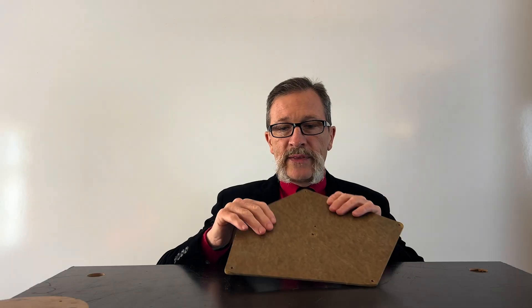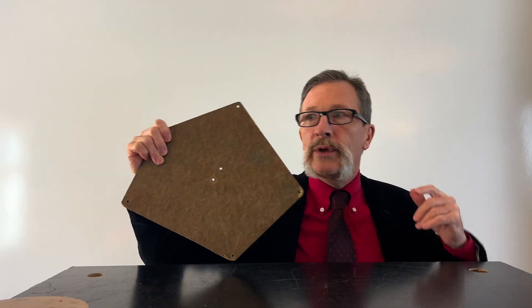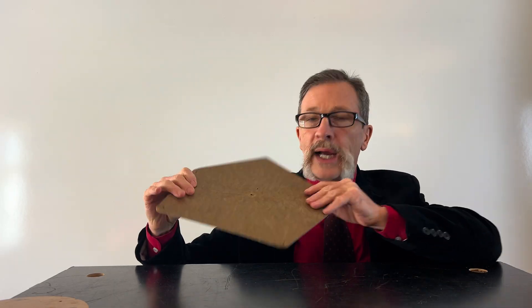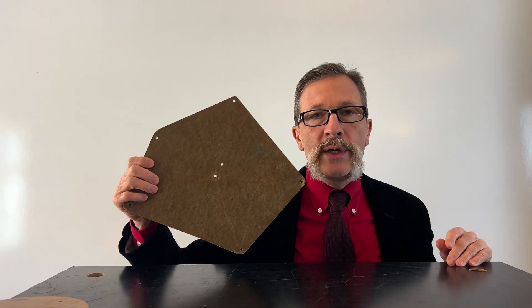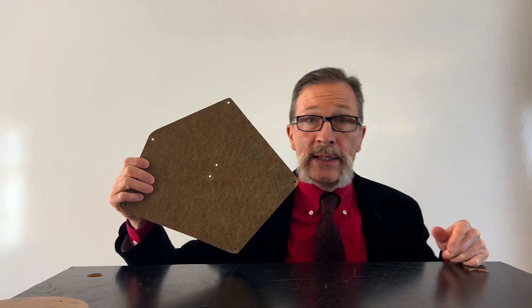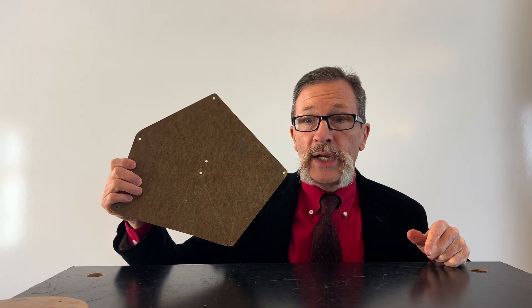For today's quiz I've got this object and it's irregularly shaped — it's just a piece of wood. There are a couple of holes here, and we simply want to know: how do you find the center of mass, or center of gravity, of this object?